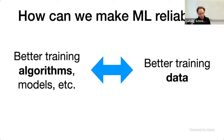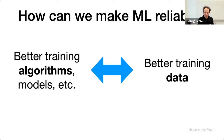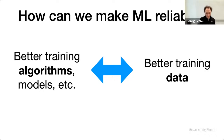Machine learning will have tremendous positive impact in these domains, but one key challenge when you apply machine learning in the real world is that it needs to be reliable. There are two approaches to making machine learning reliable: improving training algorithms and model architectures to be more robust to distribution shift and adversarial examples, or complementarily, improving the training data itself.